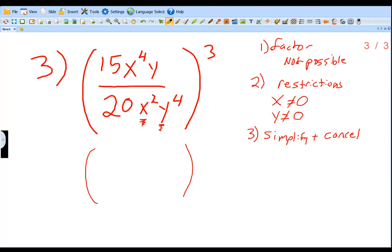15 and 20. What's the greatest common divisor for both 15 and 20? 5. 5 goes into 15 three times. So that's going to be in the numerator. 5 goes into 20 four times. So that's the denominator.